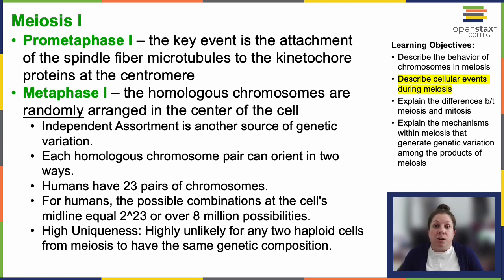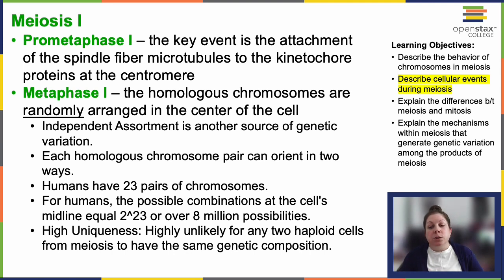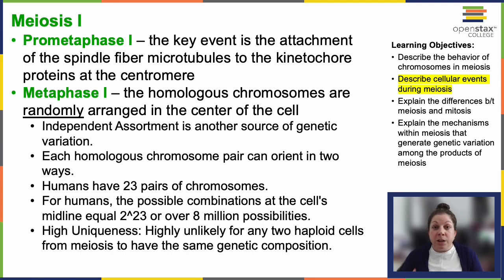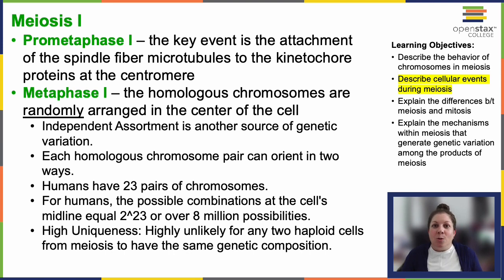The number of possible variations depends on the number of chromosomes in each set, and there are two potential orientations for each tetrad, resulting in a number of alignments equal to 2^N, where N is the number of chromosomes per set. In the case of humans with 23 pairs, this results in over 8 million — that's 2 to the 23rd — possible orientations. And this does not account for the variability introduced by the crossover events that happened earlier. So this is just a huge amount of potential diversity, which is why siblings may look a lot alike or may not, depending on how everything aligned and crossed over.